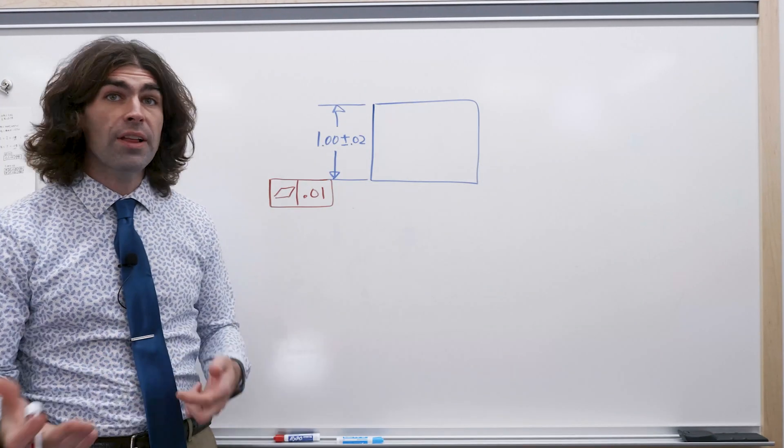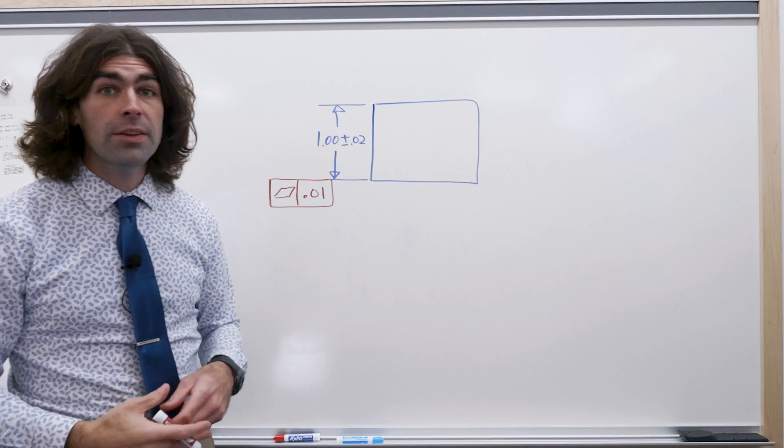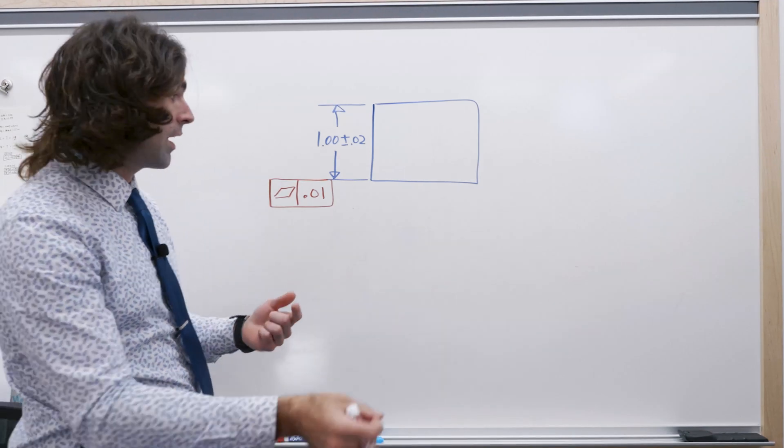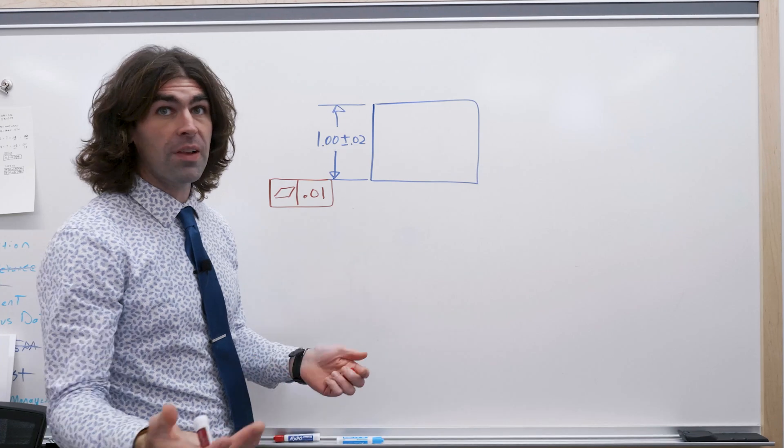Here's a block with a flatness tolerance. So pretty easy requirement to understand. We got two parallel planes in which the points of the surface must lie.